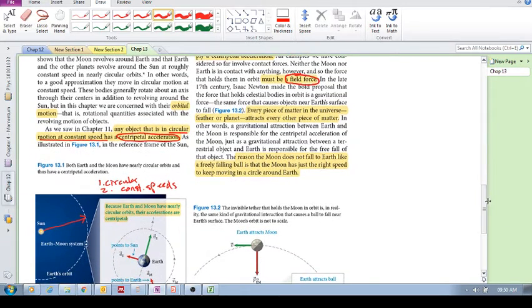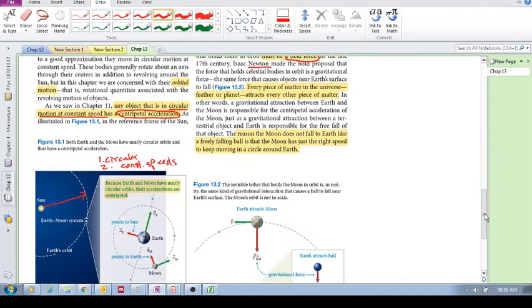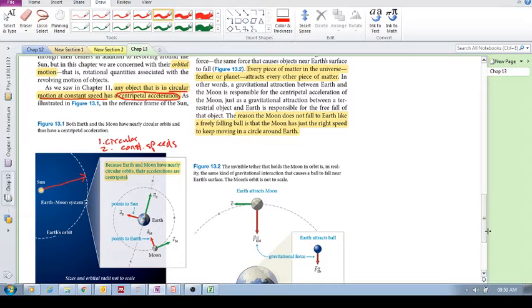This is really the focus of where we're getting to. What Newton found is that this force that is causing the centripetal acceleration is the same force that is causing an object to fall to the Earth's surface.